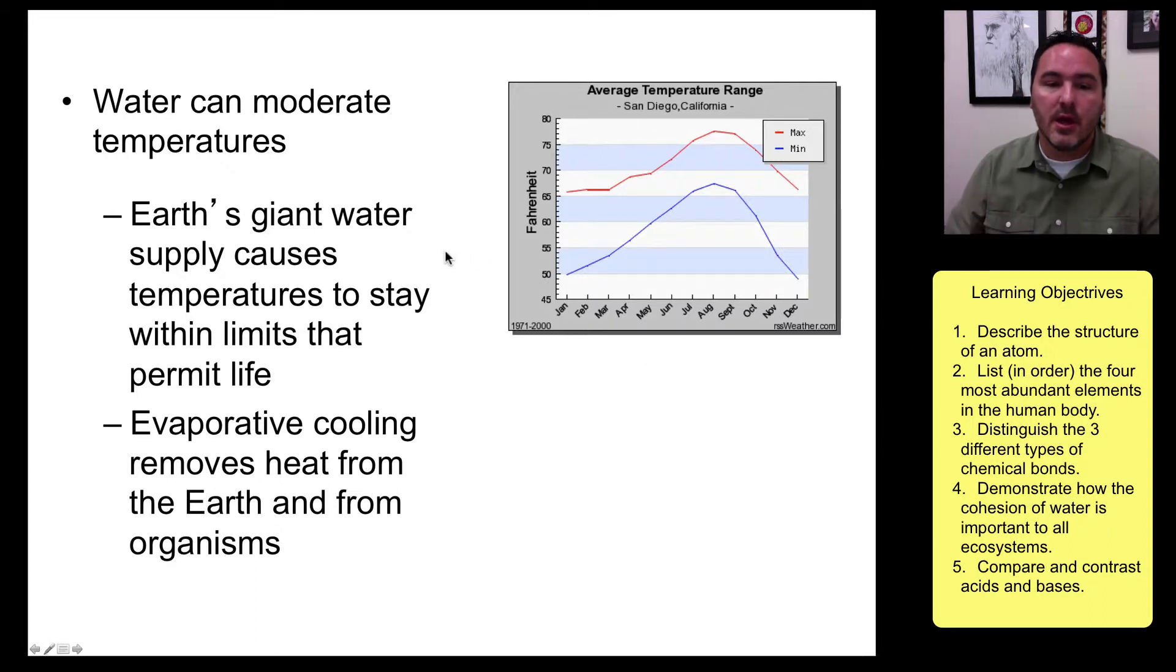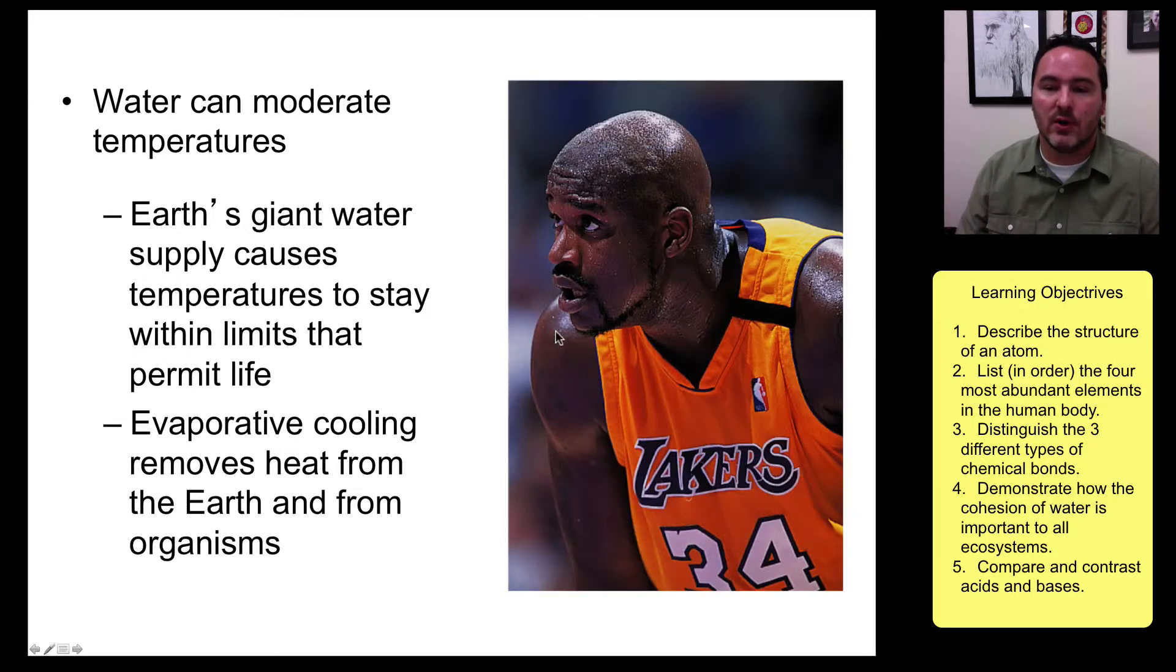Water can moderate temperatures. So, for example, if you look at the temperatures in San Diego, you see that there's a range of about 50 degrees in the coldest time in the winter to up to about 78 degrees in the warmest time in the summer. And that's it. Where I live, here in Utah, we get way below zero and even above 100 because we don't have large bodies of water that moderate the temperature. This also can be looked at in the way of evaporative cooling, which is a really important way that many organisms keep their body temperatures at a fairly constant temperature in order to not overheat. So a very large organism like Shaquille O'Neal needs to sweat a lot in order to have that evaporative cooling.